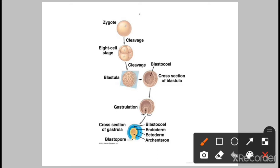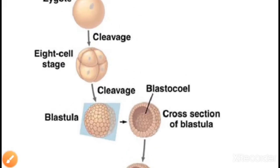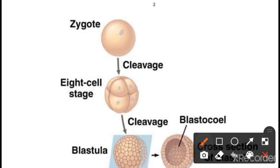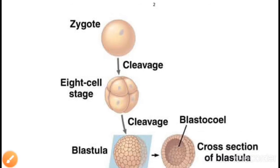After the zygote forms, it starts dividing. There is a sequence of mitotic divisions in the zygote that is called cleavage. The first cleavage divides the zygote into two cells, then another mitotic division produces four cells, and these divisions continue until cells reach the eight-cell stage.